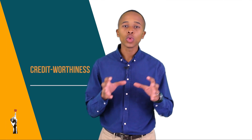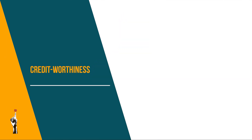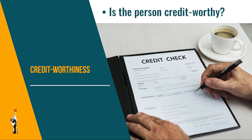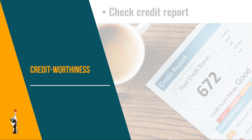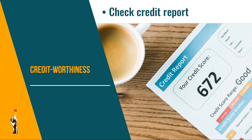Let's look at credit worthiness. Before a business can grant a person to buy on credit, they must first see if the person is credit worthy — in other words, if they are able to pay off their debt. To do this, they must look at the person's credit records, meaning how the person paid off their previous debts.